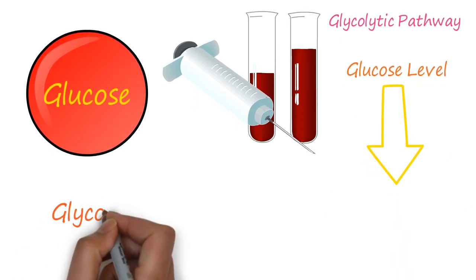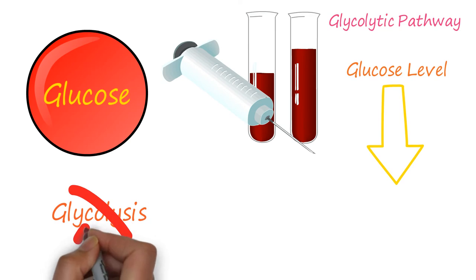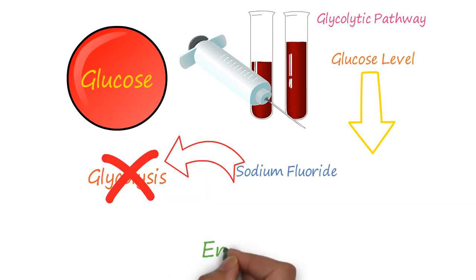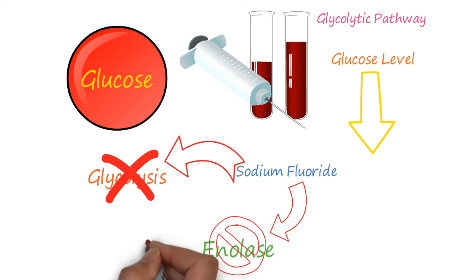To inhibit glycolysis, we use sodium fluoride. Enolase is a glycolytic enzyme. Sodium fluoride inhibits the action of enolase, and as a result, glycolysis is prevented.